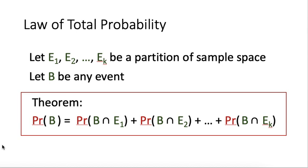For the law of total probability, the statement reads as follows. Assume that we have a certain set of events E1, E2, E3, up to EK, and these events form a partition of the sample space. That means all these events are disjoint — they do not have any overlapping outcomes — and they span the whole sample space.